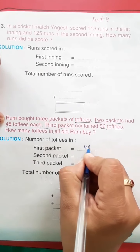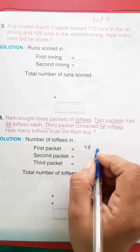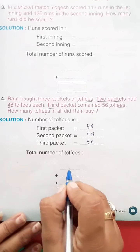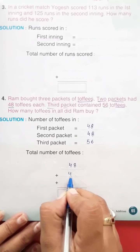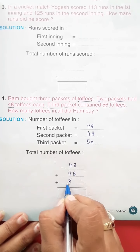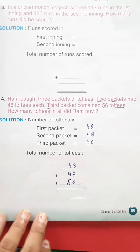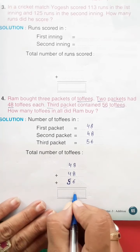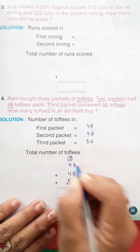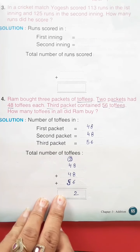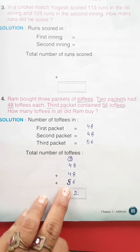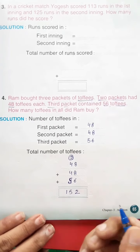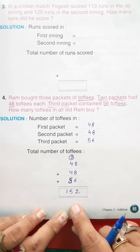First packet me 48, second packet me bhi 48, aur third me 56. To abhi isko hamko plus karna hai total ke liye: 48 plus 48 plus 56. Eight plus eight ho gaya 16, 16 me 6 jodenge to aayega 22, 2 carry 2. Ab 4 plus 4 ho gaya 8, 8 plus 5 ho gaya 13, 13 me plus 2 karenge to 15. Total 152 toffees hain.